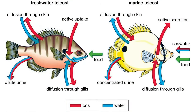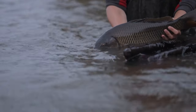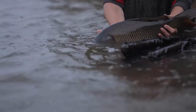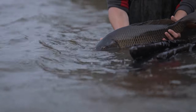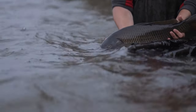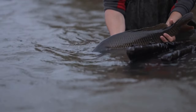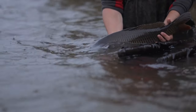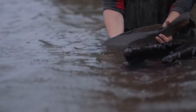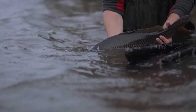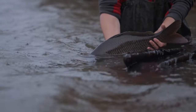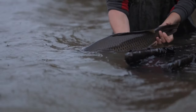Freshwater fish also rely on their gills for respiration. However, their gills are uniquely adapted to the lower salt content of freshwater environments. These remarkable organs aid in extracting oxygen from the water while preventing the loss of essential salt.